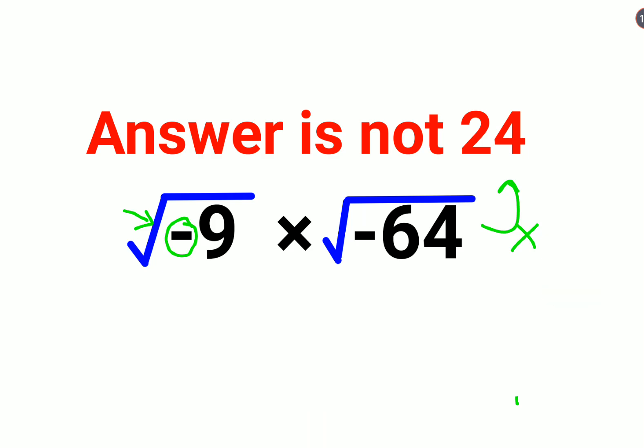For that you need to remember that root of negative 1 is taken as i. So now instead of √(-9), we will write this as √9 × √(-1), and the 64 we will write as √64 × √(-1). So now this becomes what?